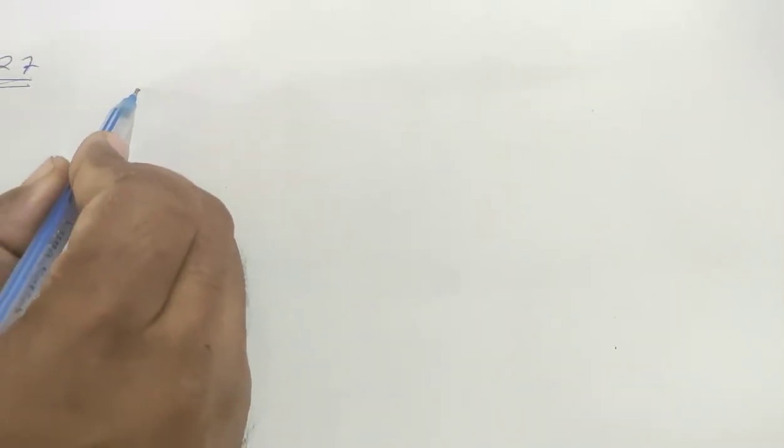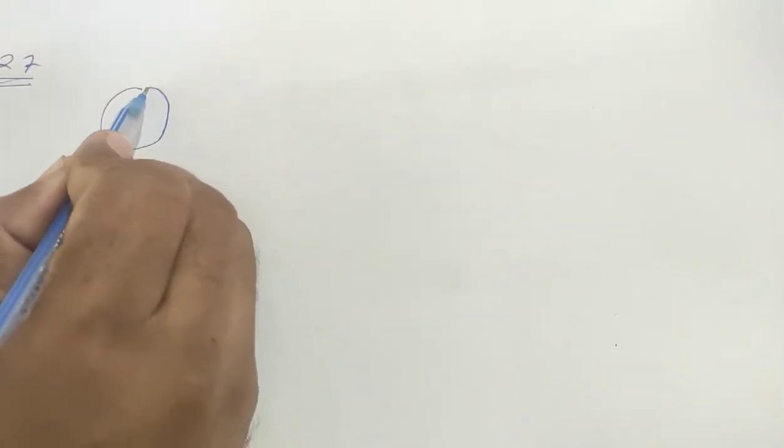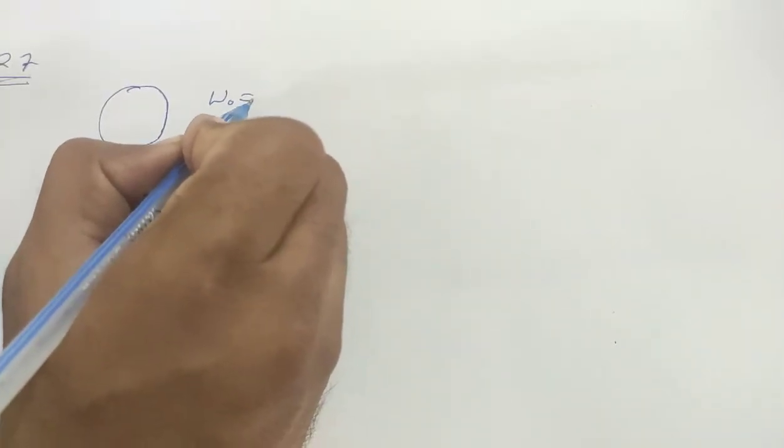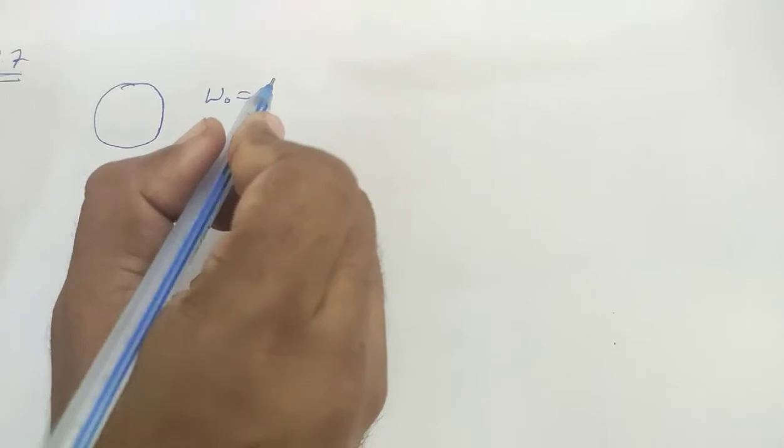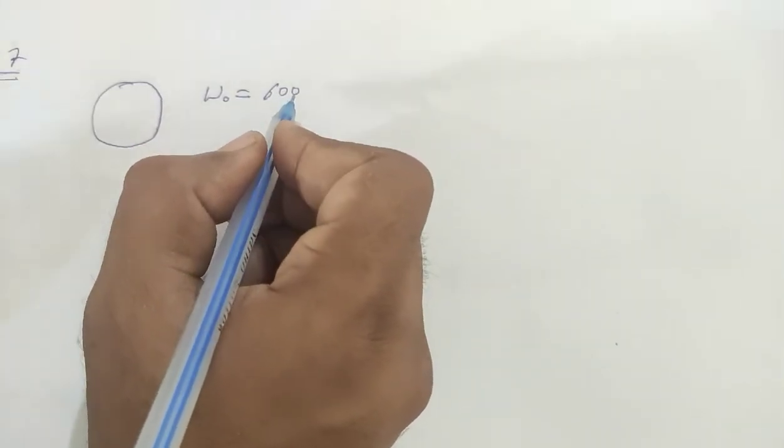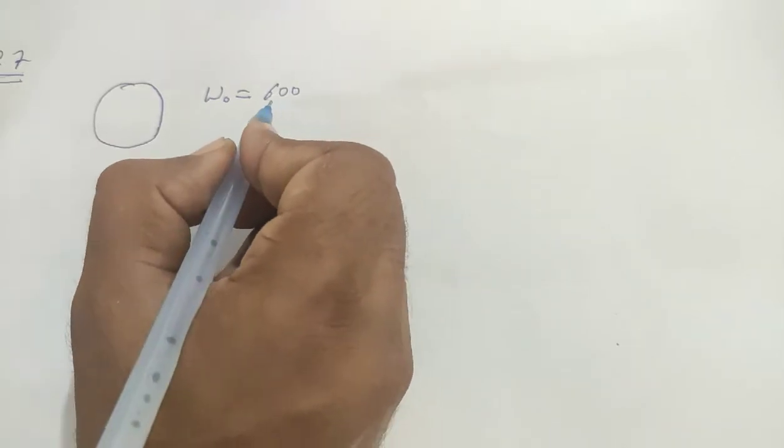Find the angular deceleration and the angular velocity 5 seconds after the application of the torque. Okay, so we have a wheel and this wheel is given an angular speed of 600 rpm. Converting to rotations per second, this will be 600 divided by 60, which is 10 rpm per second. This is your initial speed.